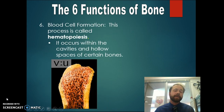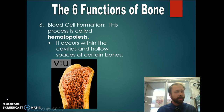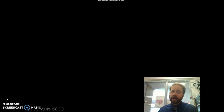Then we have blood cell formation. Our blood cells are actually made in our bones — this occurs within the cavities and hollow spaces of certain bones, not all bones, but certain ones. That's it. Like I said, it's going to be quick, and that's just an overview of the six primary functions of bones. When you come into class, we're going to take a closer look. See you then.